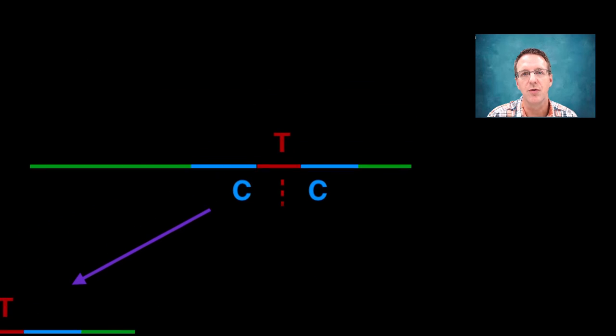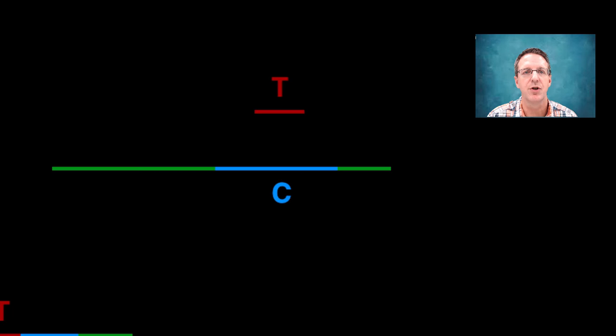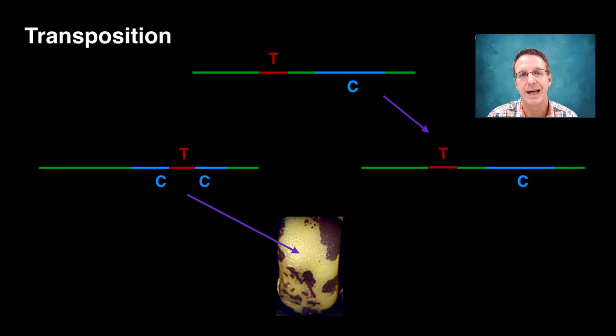But the transposon itself codes for an enzyme called transposase, which acts on the transposon itself, cutting it out and moving it to a different spot in the genome. And when this happens, the kernel color gene is actually reestablished, and that section of the kernel is purple.